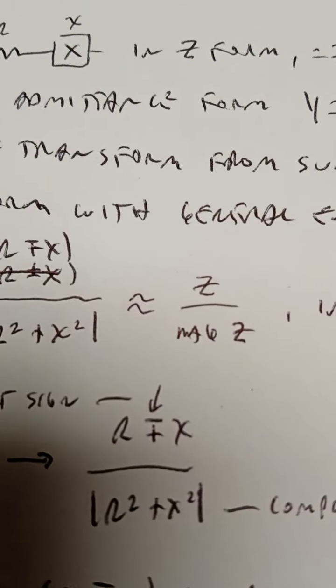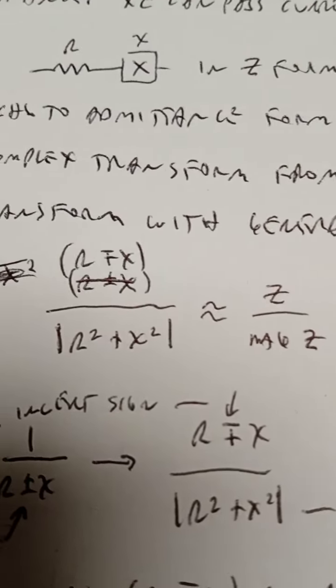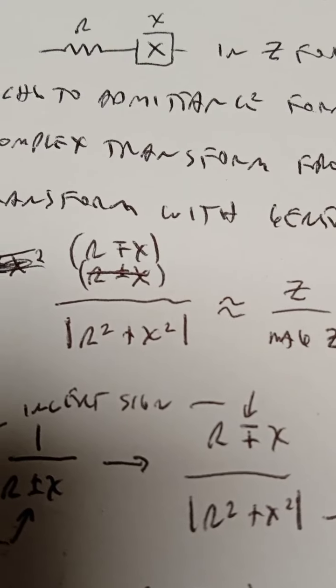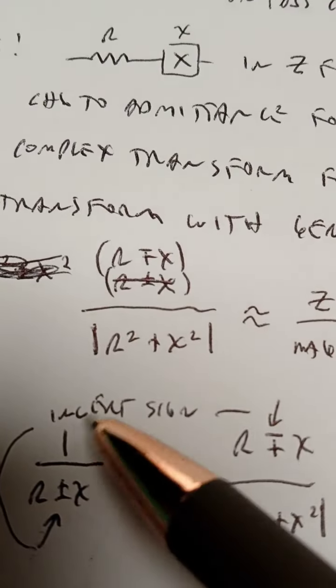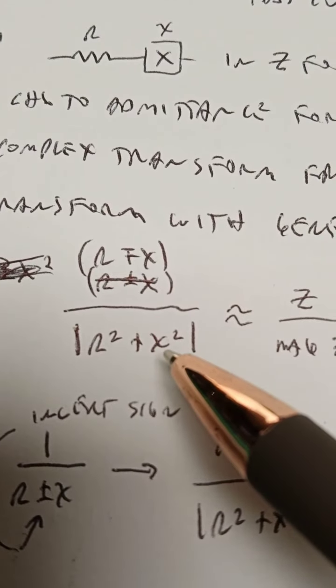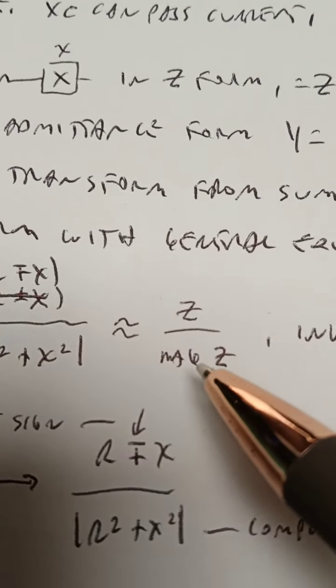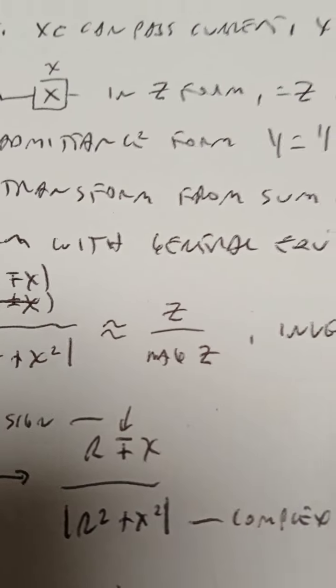That's not really mag Z because the equation for mag Z is the square root of the squares. So the magnitude Z would be the square root of this, but we're not doing the square root part. So this is not quite accurate, but it gives you the correct idea, hopefully.